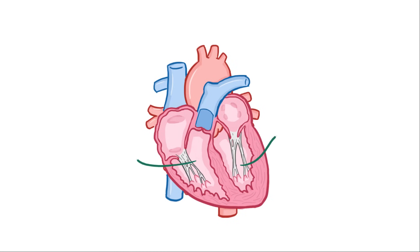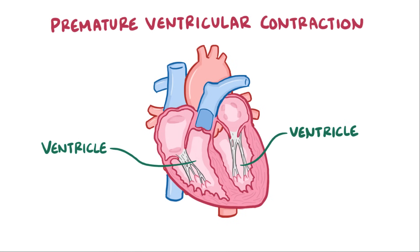The heart has two lower chambers called the ventricles. A premature ventricular contraction is when the ventricles contract earlier than normal in the cardiac cycle.